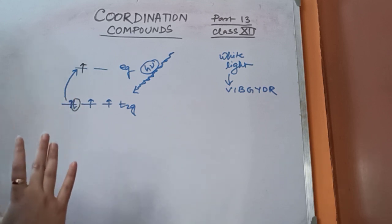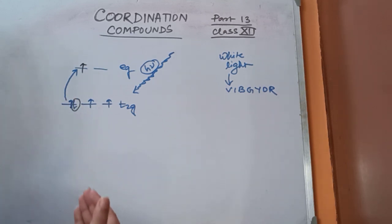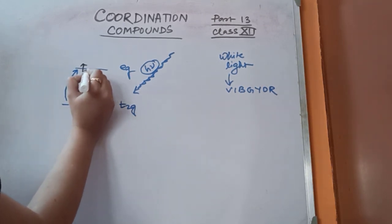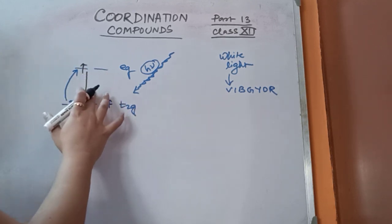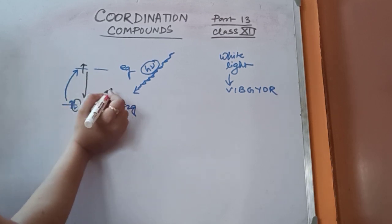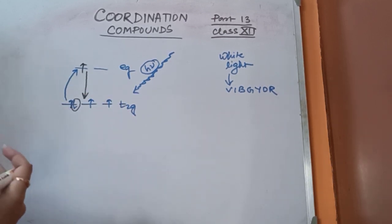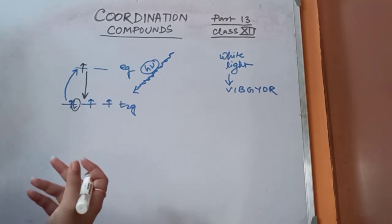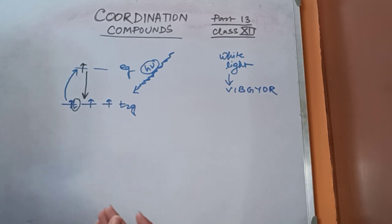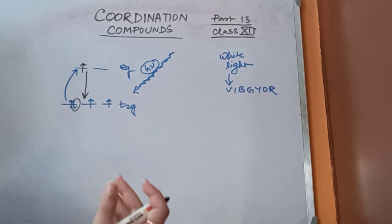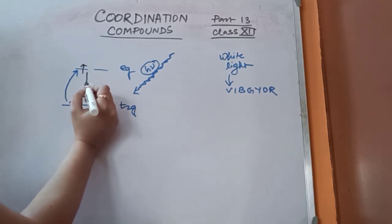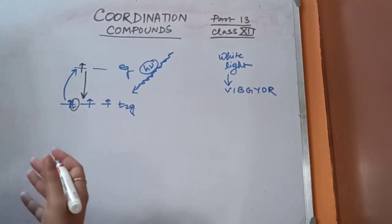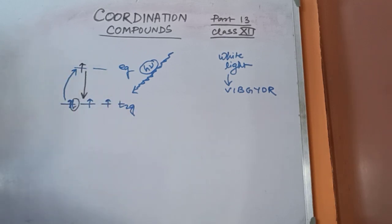Remember, electrons cannot remain in the higher energy state for a long time. A time will come when the electron returns back to the lower energy state, and on returning it will emit energy. This emitted energy will either remain in the visible region of the electromagnetic spectrum, or in ultraviolet or infrared. If the emitted energy remains in the visible region, then this molecule will show color.